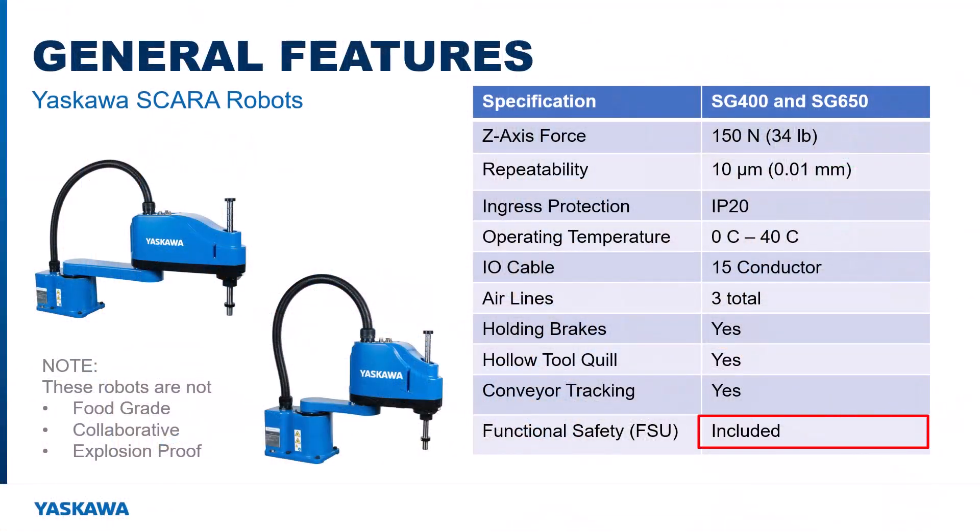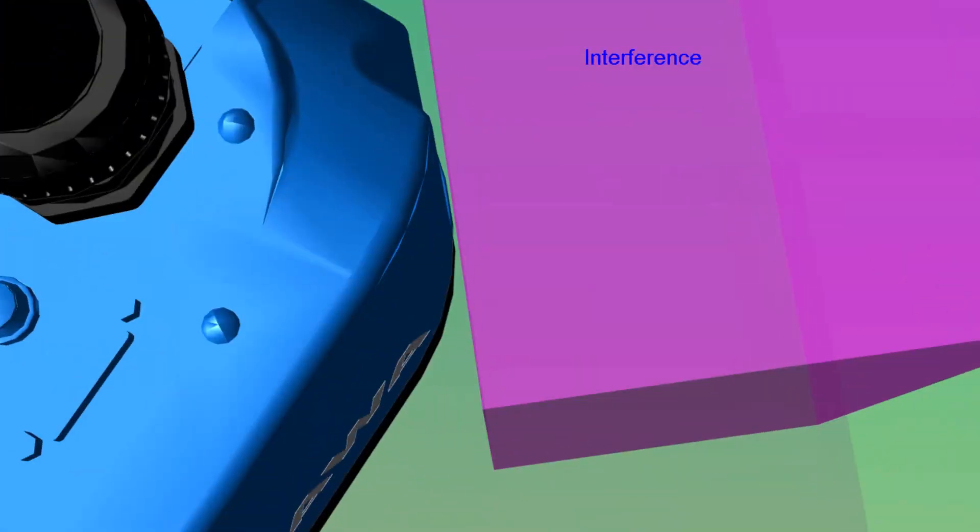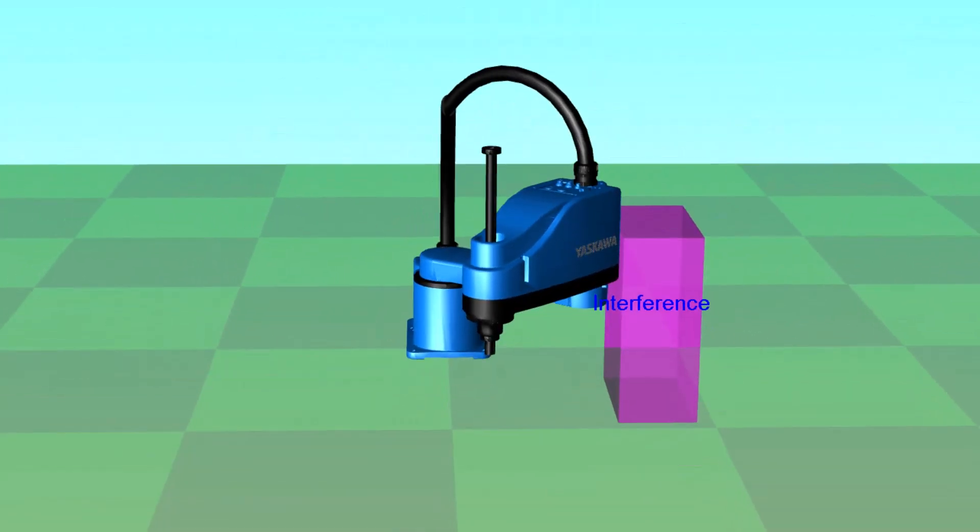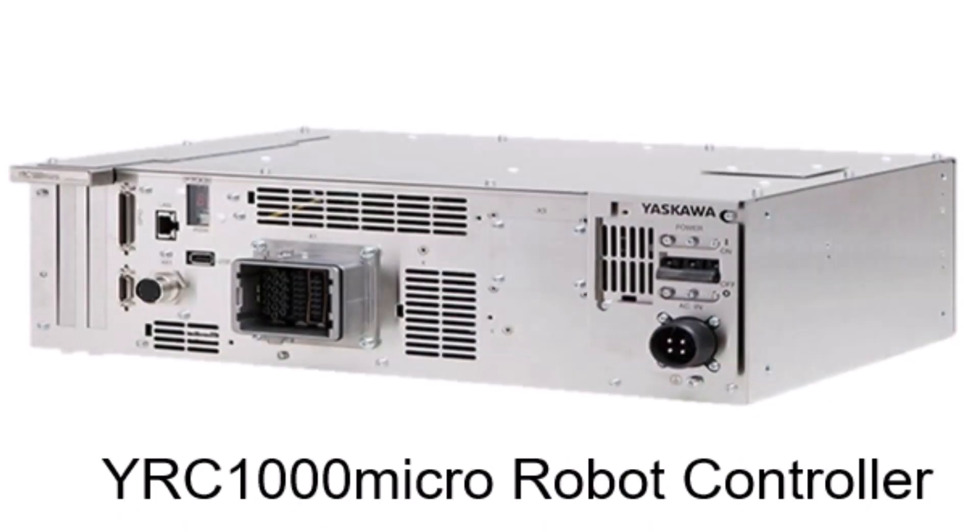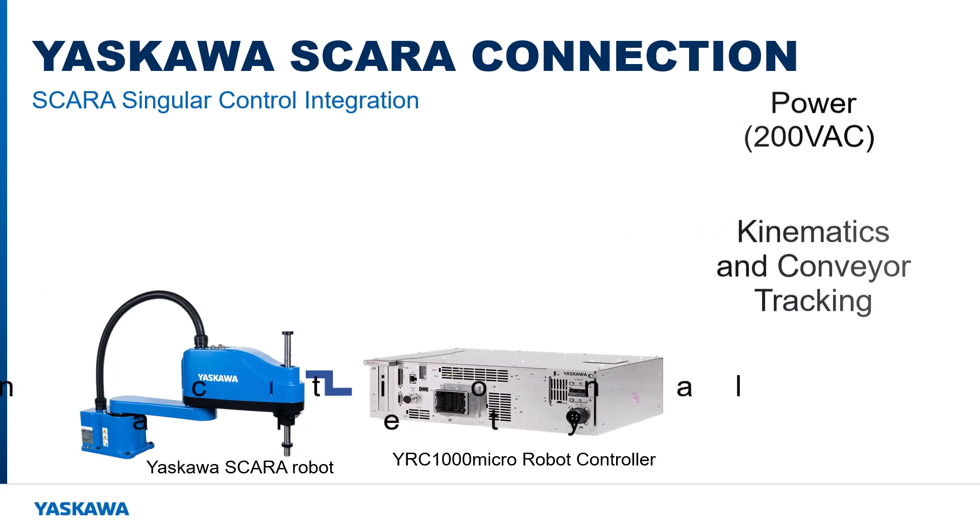Functional safety is included on both models. This keeps every part of the robot and the tool clear of interference. Functional safety is programmed in the robot controller, the YRC-1000 Micro. It's the YRC-1000 Micro that powers the robot, handles all the kinematics, processes functional safety, and machine safety.